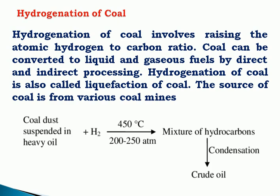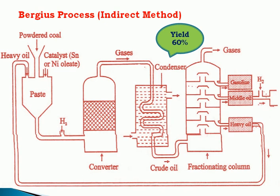One of the products obtained is petrol gas. This is how coal is converted into petrol — one of the best methods is the Bergius process, an indirect method. In this method, powdered coal is mixed with heavy oil and a catalyst such as tin or nickel oleate. The paste is pumped through the converter with hydrogen gas, heated to around 450 degrees centigrade at 200 to 250 atmospheric pressure. The solid coal is converted into a mixture of hydrocarbons in the gas phase, which then passes through a condenser, reducing temperature and converting to crude oil containing various hydrocarbons.